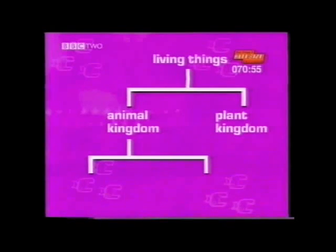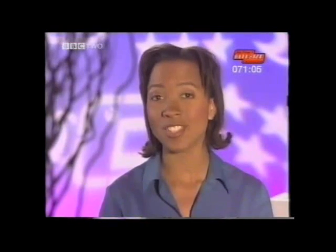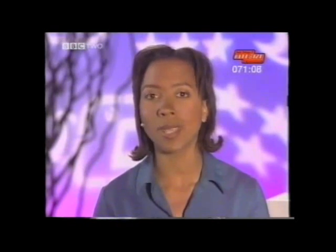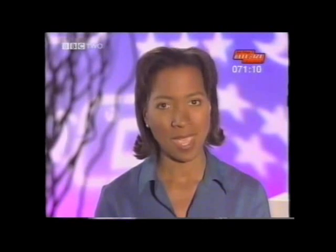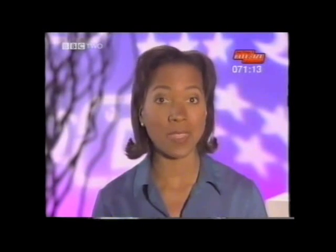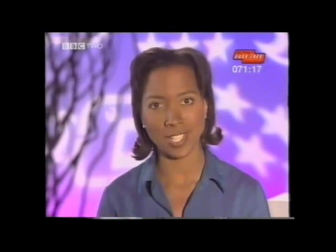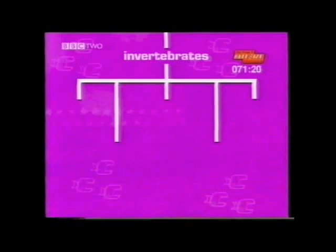The animal kingdom can be clearly grouped into two: animals that don't have a backbone — invertebrates — and animals that do — vertebrates. For your test, you don't need to know all the names of the invertebrate groups; you'll often be given a table with their names. But it's a good idea to be familiar with some of the species. Invertebrates can be split into five groups.